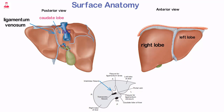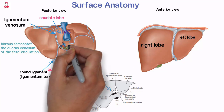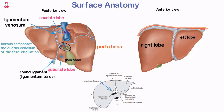The ligamentum venosum is a fibrous remnant of the ductus venosus of the fetal circulation. The quadrate lobe is located on the anterior inferior surface of the left lobe between the gallbladder and the round ligament. The hilum of the liver, the porta hepatis, is located on the inferomedial border of the liver and is the central location for vessels to enter and exit the liver.